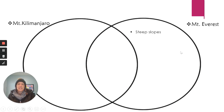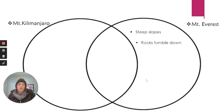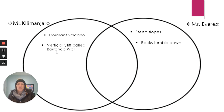For Mount Everest, we have steep slopes — we'll put that on the Everest side since the article specifically mentioned it there. Rocks tumble down: they talked about loose rocks tumbling during snowstorms, so that goes on the Everest side too. For Mount Kilimanjaro, it's a dormant volcano — Mount Everest was not a volcanic mountain, so that danger belongs on Kilimanjaro's side. There was also the Barranco Wall, a vertical cliff specific to Kilimanjaro, so that lands in Kilimanjaro's differences column.